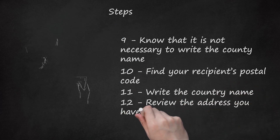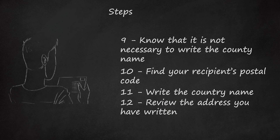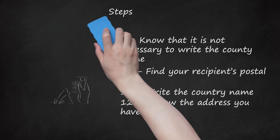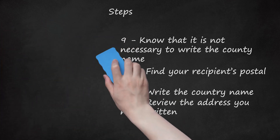Step 12. Review the address you have written. Each address will contain different information depending on whether you are writing a personal or business letter, and whether or not you choose to include the county name. If you were to write every piece of information out, you should have your recipient's name, the name of their business or organization, the name of the building, the street address, the village name, the post-town name, the county, the post-code, and the country's name.